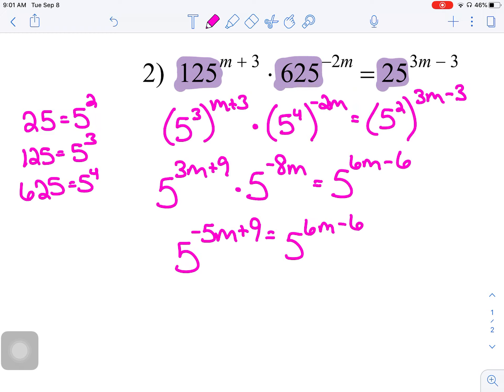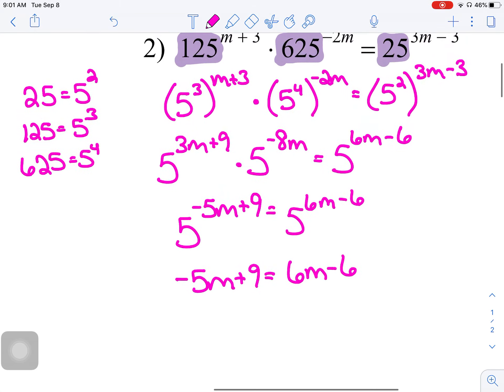All right, we've got one exponent piece on the left, one on the right. Set just the exponents equal because the bases are the same. So, negative 5m plus 9 equals 6m minus 6. Okay. Let's see. Move the 5m over. That makes 11m. Move the 6 over. That makes 15. So, m is equal to 15 over 11.